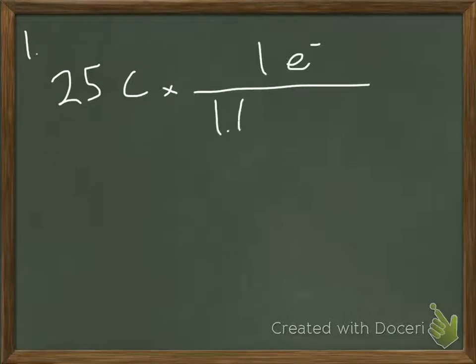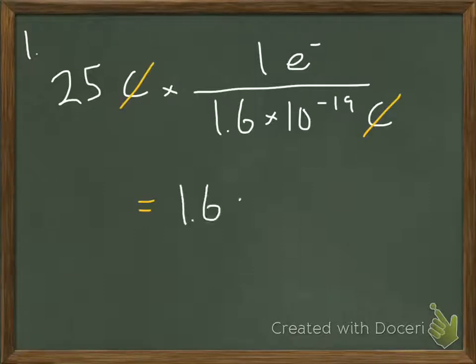In number one, we're given the number of Coulombs in a bolt of lightning, and we have to convert to electrons. So we can just use our electrons to Coulombs conversion factor here. Don't forget we're dividing, we're not multiplying.